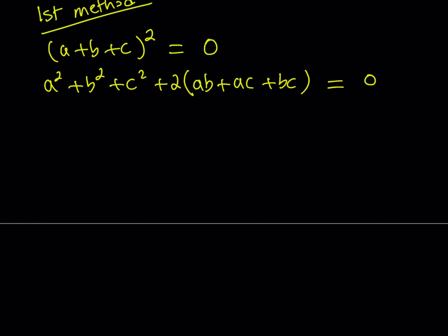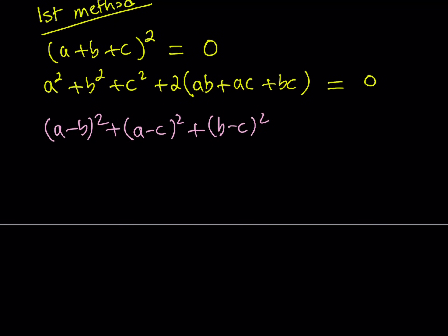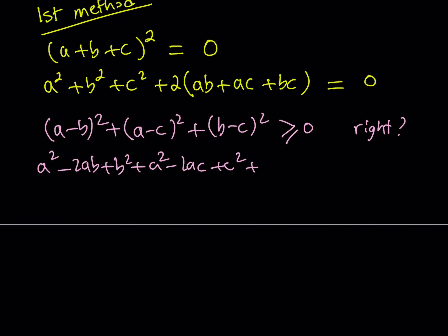We're going to start with something well known. Since a, b, c are real numbers we know that the sum of squares cannot be negative. So we can safely say that (a minus b) squared plus (a minus c) squared plus (b minus c) squared is always greater than or equal to zero. Expanding gives a squared minus 2ab plus b squared plus a squared minus 2ac plus c squared plus b squared minus 2bc plus c squared is greater than or equal to zero. Collecting positive terms on the left gives 2a squared plus 2b squared plus 2c squared greater than or equal to 2ab plus 2ac plus 2bc.